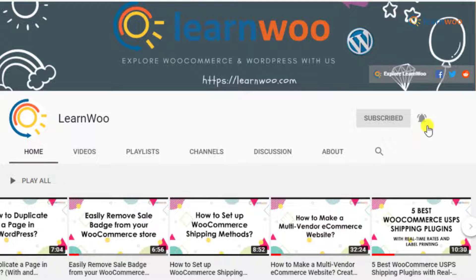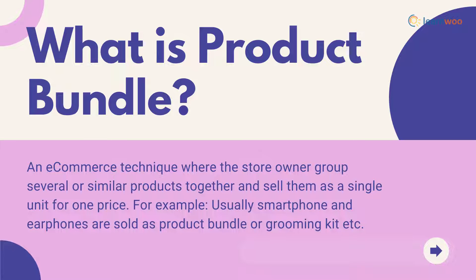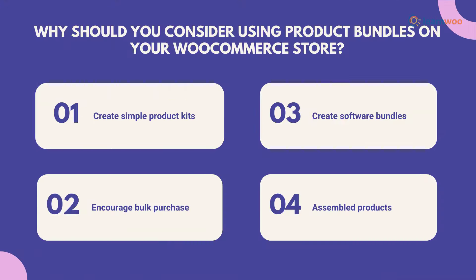What is a product bundle? It is an e-commerce technique where the store owner groups several or similar products together and sells them as a single unit for one price. For example, smartphones are sold with earphones as a bundle, or a grooming kit with different products.